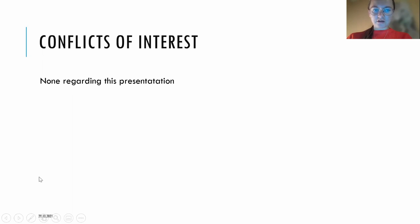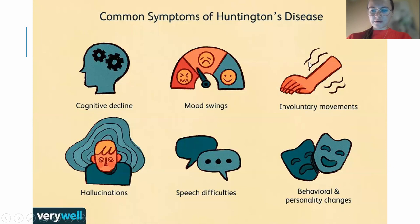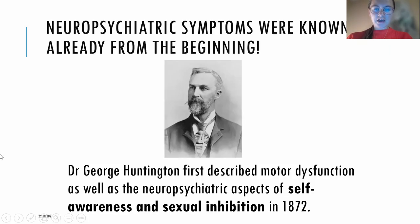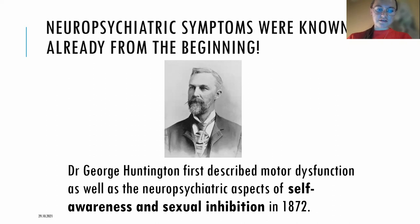I have no conflicts of interest regarding this presentation. As background, there are a variety of common symptoms in Huntington's disease, in particular cognitive decline, mood swings, involuntary movements, hallucinations, speech difficulties, as well as behavioral and personality changes. It is remarkable that already in the 19th century when Huntington's disease was first described, these neuropsychiatric aspects were mentioned, including for example sexual inhibition.